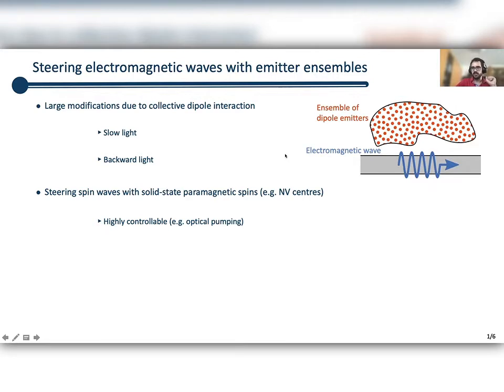The reason we want to use NV centers is because they are very highly controllable. They can be controlled in the microwave domain and they can also be optically pumped, initialized in their ground state by external optical pumping. They also couple to spin waves via magnetic dipole interactions, so the ground state manifold of NV centers is a three-level system whose transitions have a magnetic dipole moment that couples to spin wave magnetic fields.